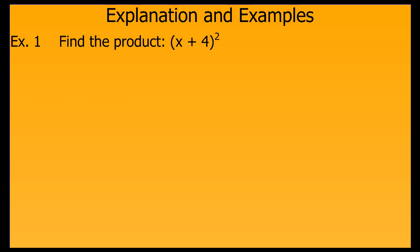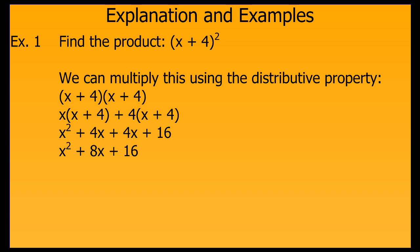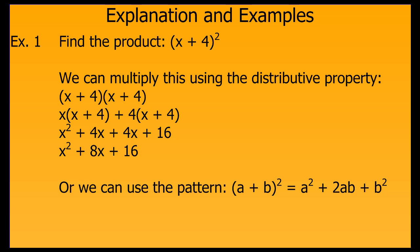Let's look at some examples. We want to find the product of the quantity x plus 4 squared. We already know how to do this using the distributive property. It's perfectly fine to use the distributive property to simplify this, but if we learn the pattern, we can make this easier.